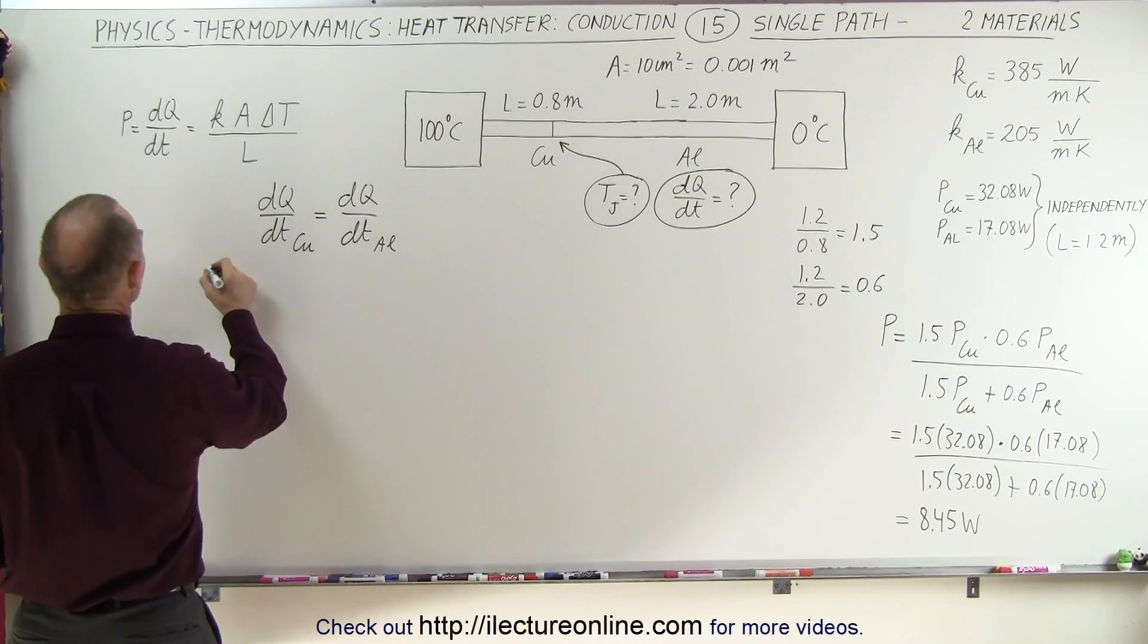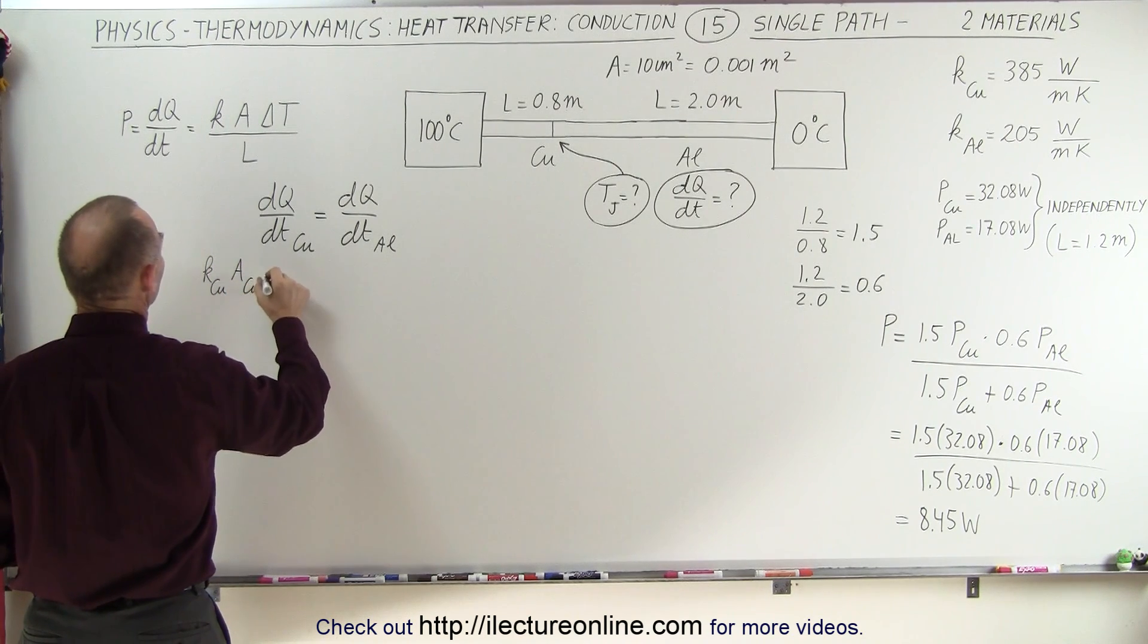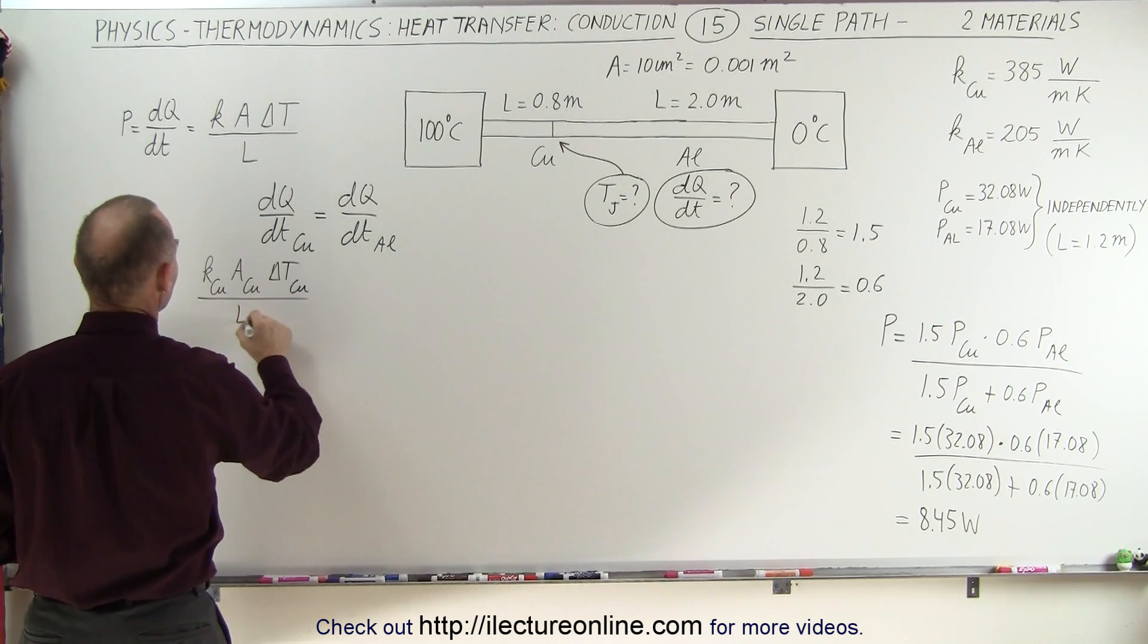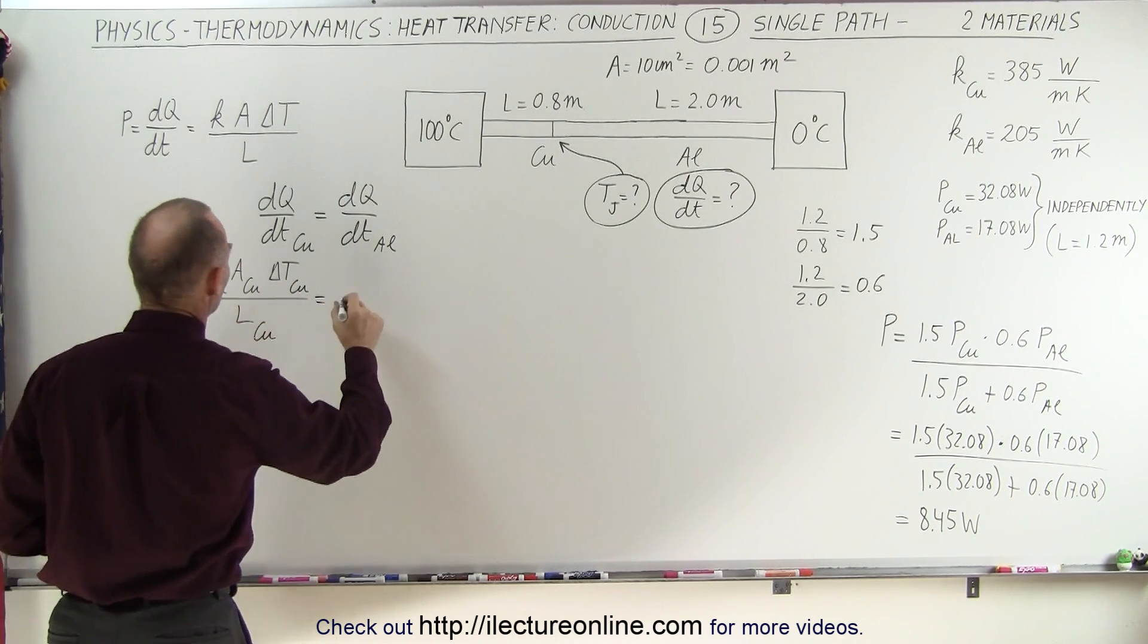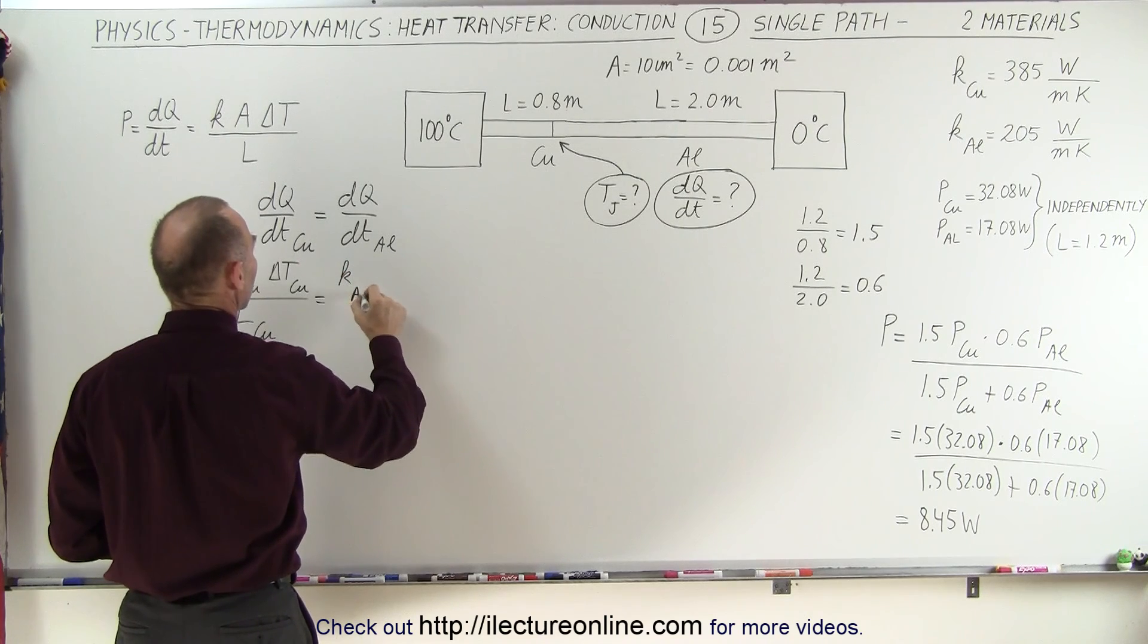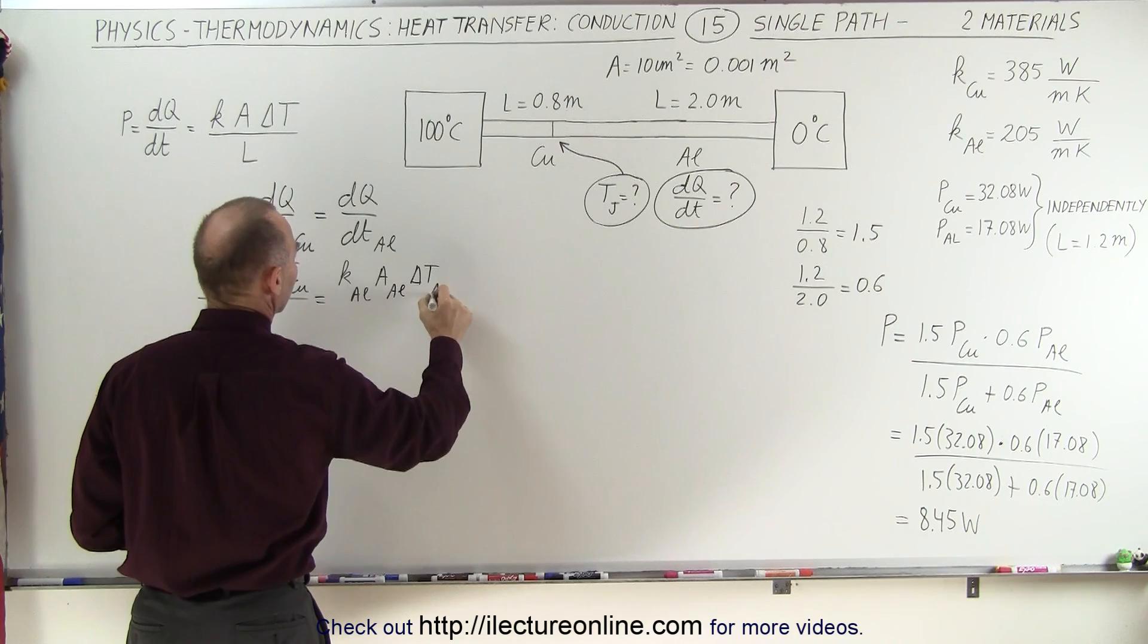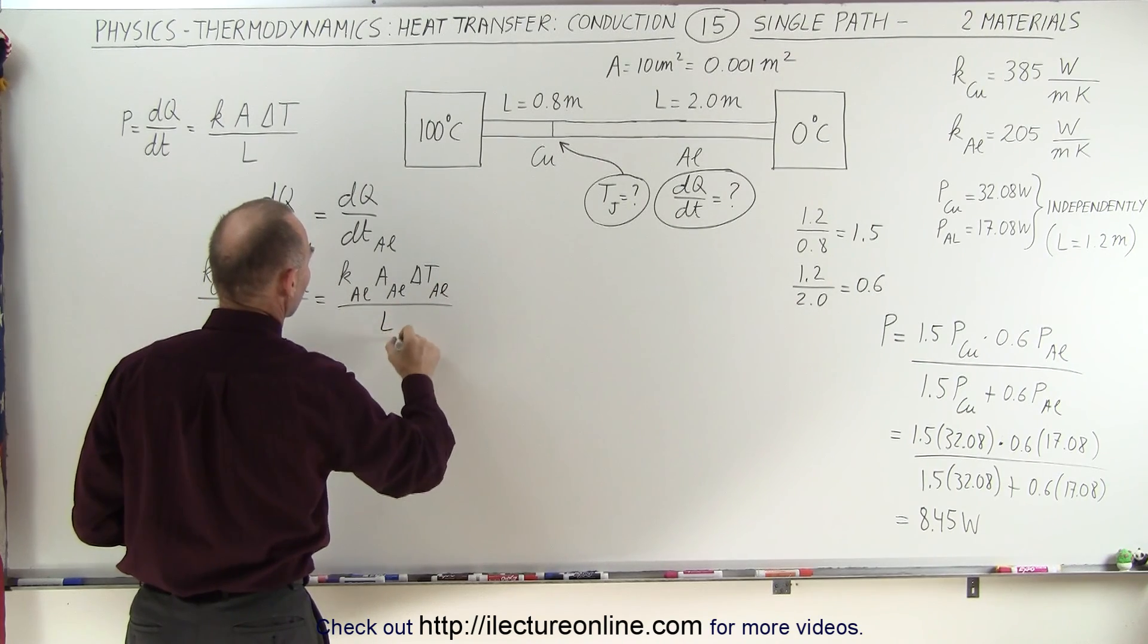So we write in there that K of the copper times the cross-section area of the copper times the difference in the temperature of the copper divided by the length of the copper is equal to K of aluminum, cross-section area, the change in the temperature, and the length of the aluminum as well.